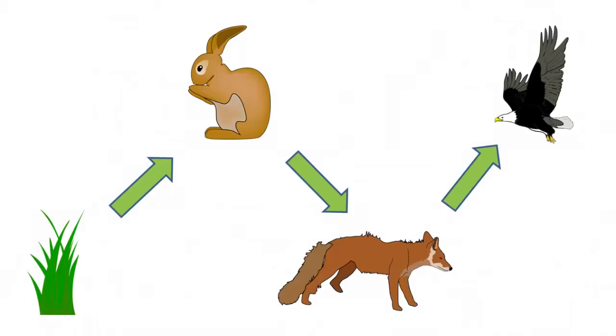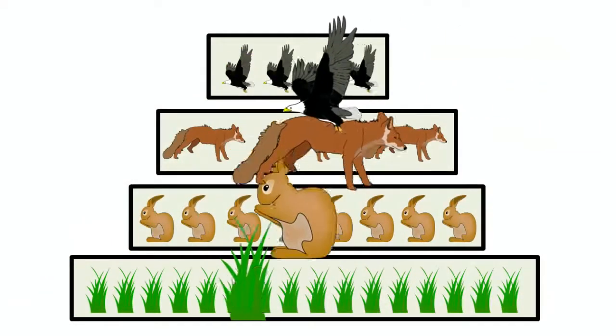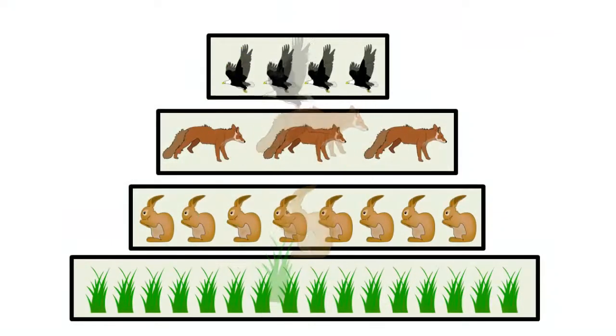A trophic level is a step in a food chain of an ecosystem. The organisms in a food chain are classified into their trophic level depending on their feeding behaviour. The number of steps an organism is from the start of the food chain is a measure of its trophic level.